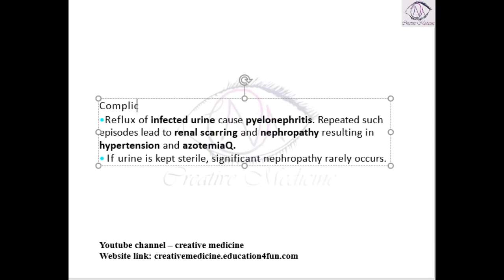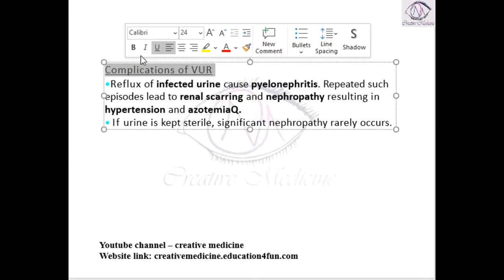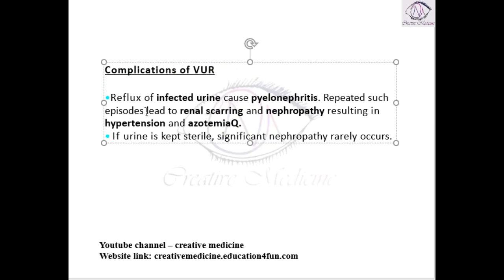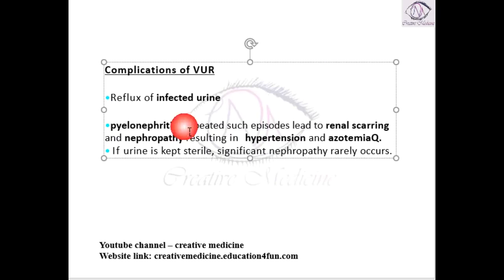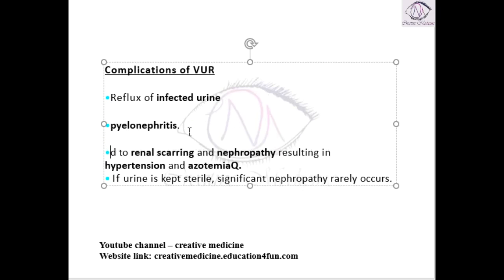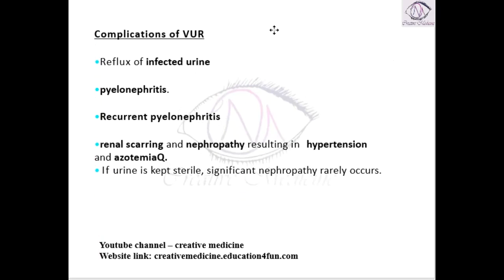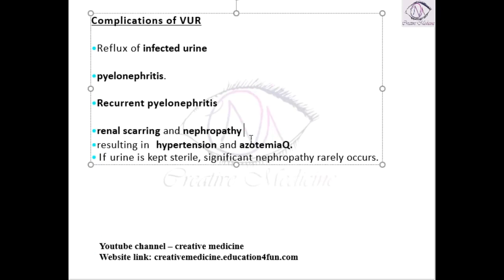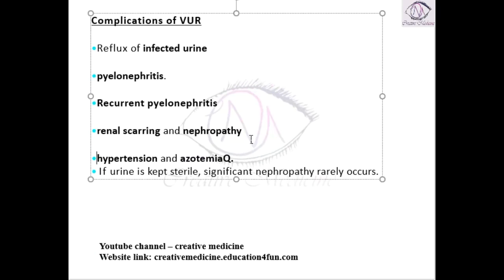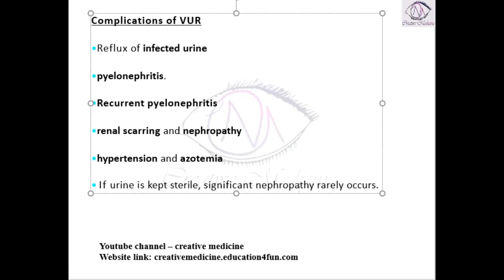In the complications of vesicoureteric reflux, whenever this reflux is present, there are two things. One, whenever there is reflux of infected urine, this will result in pyelonephritis. Whenever there are repeated episodes of pyelonephritis — that is recurrent pyelonephritis — it results in renal scarring and nephropathy. This renal scarring and nephropathy will result in hypertension and also azotemia. If the urine is kept sterile, then significant nephropathy rarely occurs.